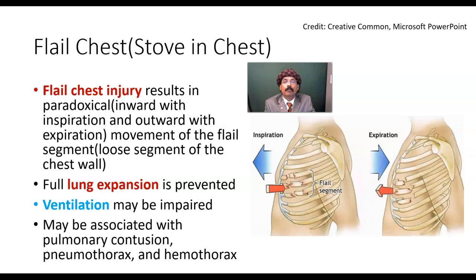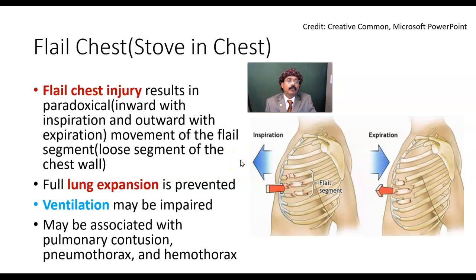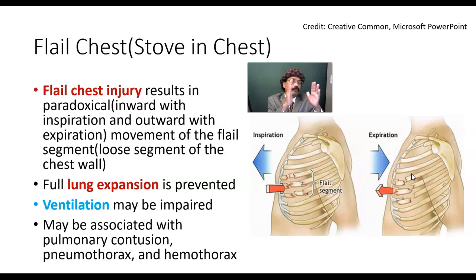What is paradoxical movement? It is the inward movement of the flail part with inspiration, and outward movement of that segment with expiration. During inspiration, ideally the rest of the chest wall goes outward and the lung expands. But in flail chest, while the other part of the chest wall goes out, this flail segment moves inward. During expiration, the entire chest wall should decrease in diameter and lung volume should decrease, but the fractured flail part comes outward. That is called paradoxical movement.